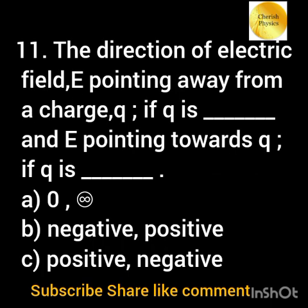The direction of electric field E pointing away from a charge q if q is, and E pointing towards q if q is: option a) zero, infinity; option b) negative, positive; option c) positive, negative.